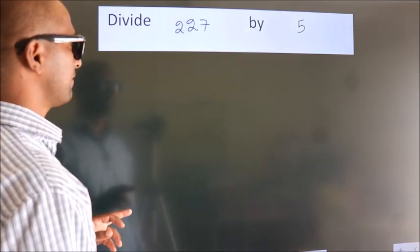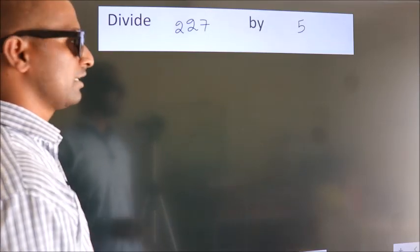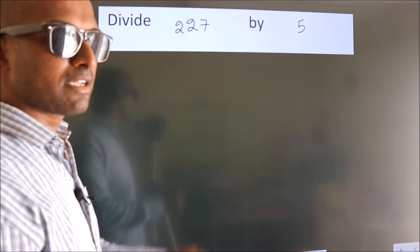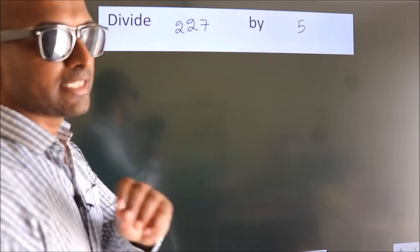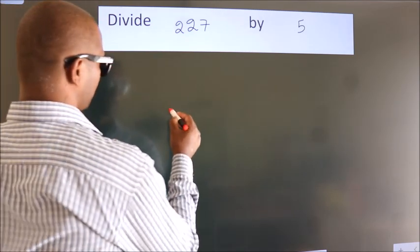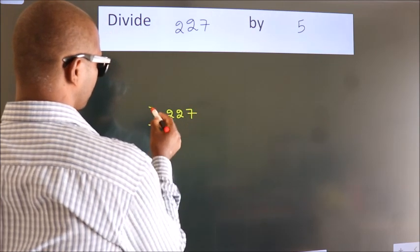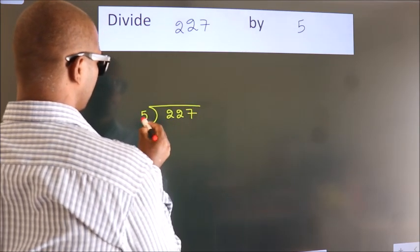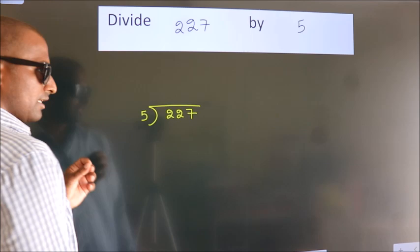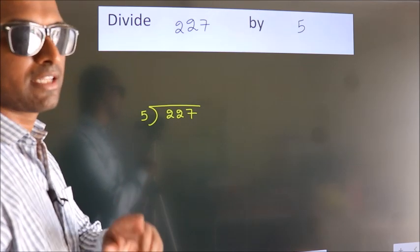Divide 227 by 5. To do this division, we should frame it in this way. 227 here, 5 here. This is step 1.